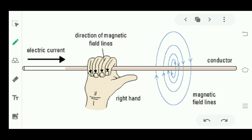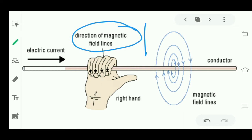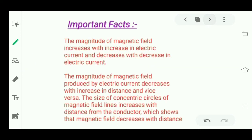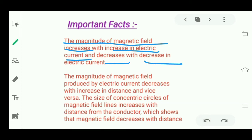Two important points: if we increase the current in a straight carrying conductor, the magnetic field strength will increase. The magnitude of magnetic field increases with increase in electric current and decreases with decrease in electric current.